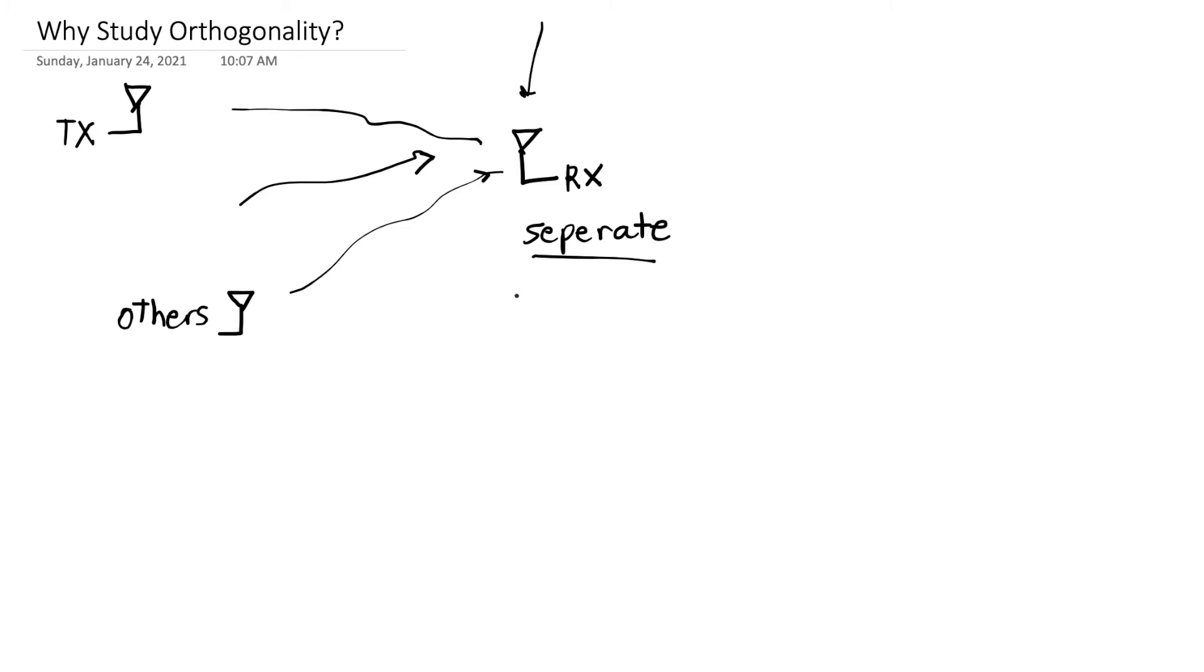What does it mean to be separated, to be able to be separated? Well that's the idea of orthogonality. Orthogonality is just the idea that two signals can be separated from each other at the receiver.